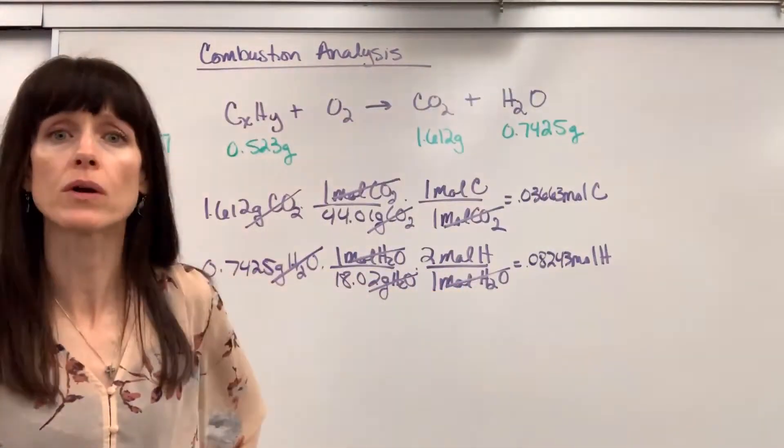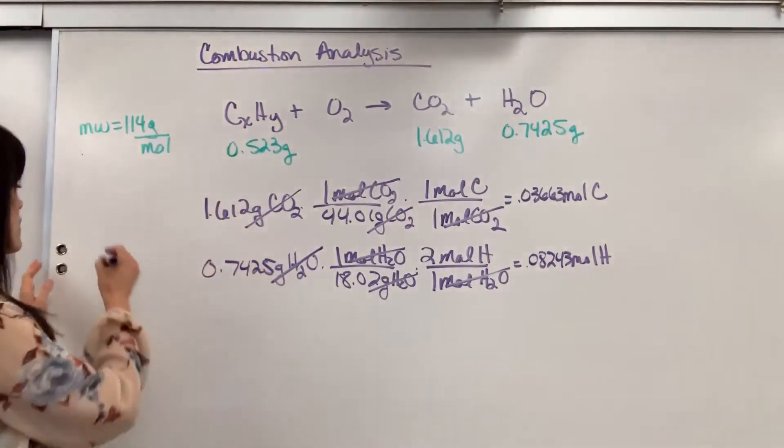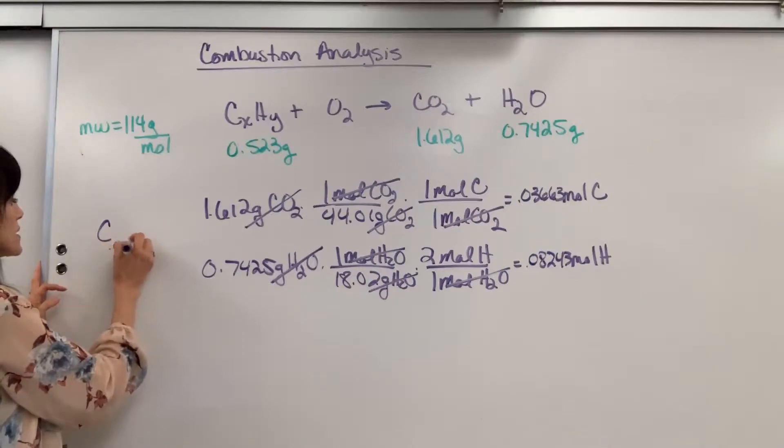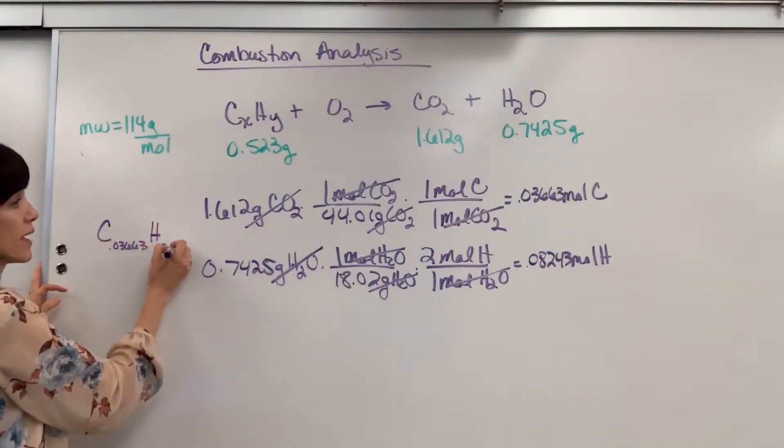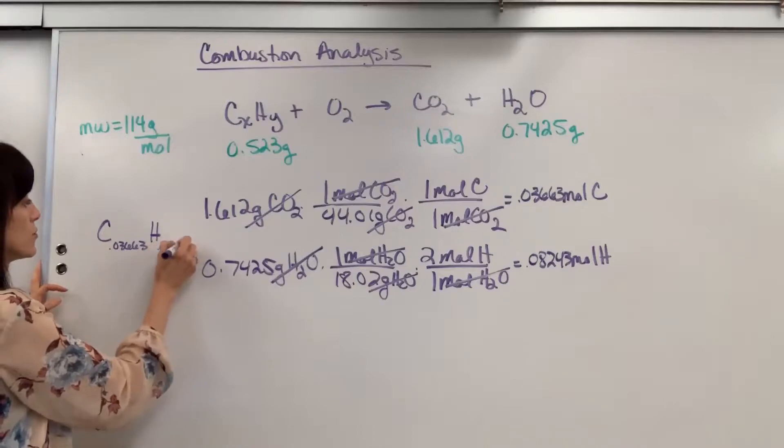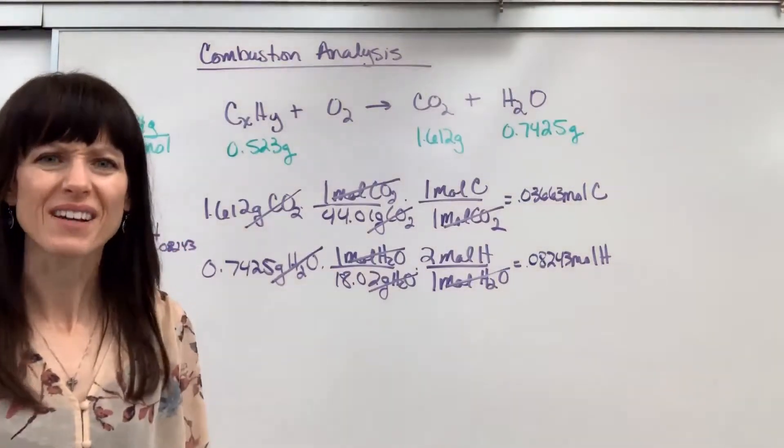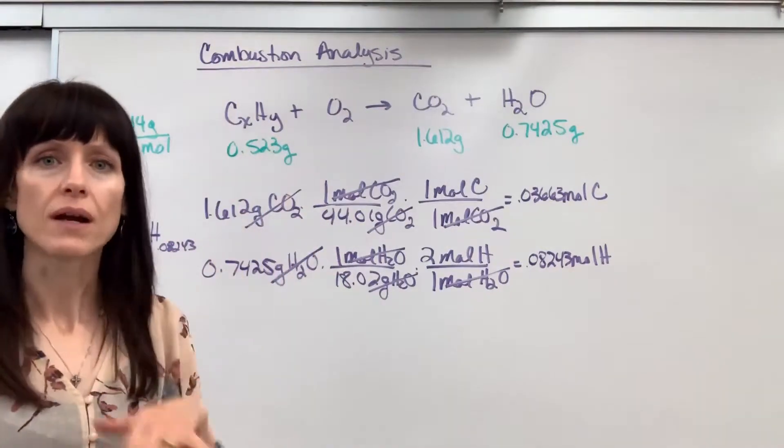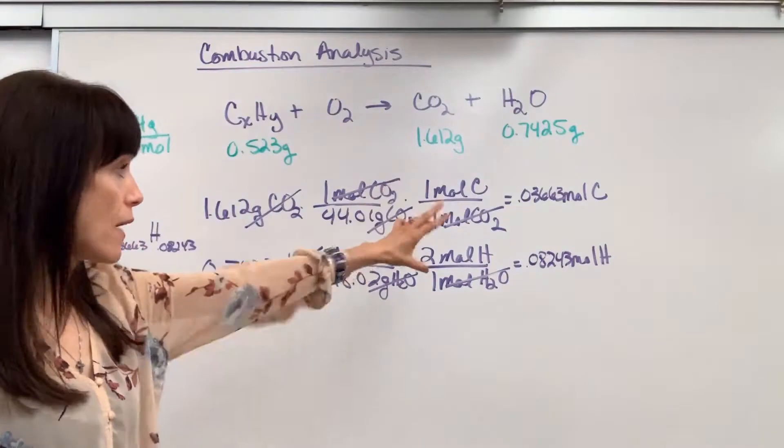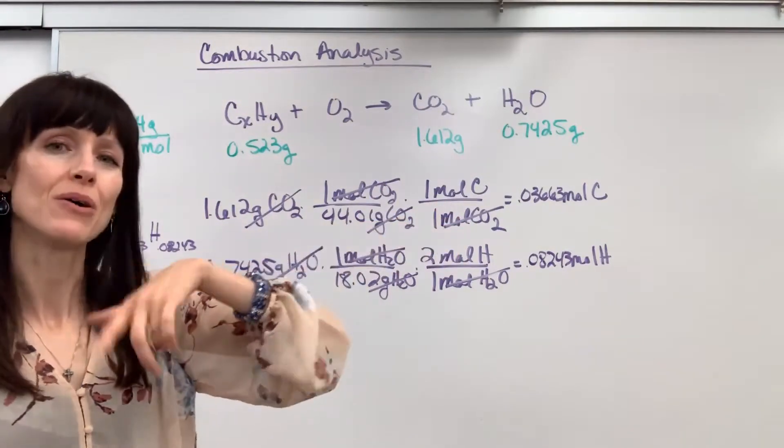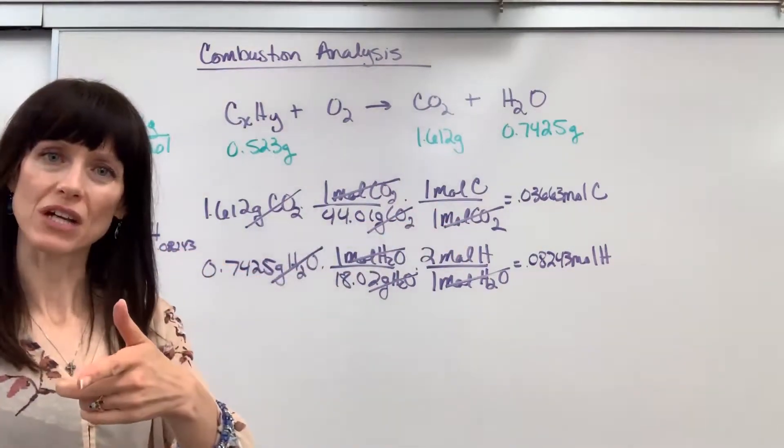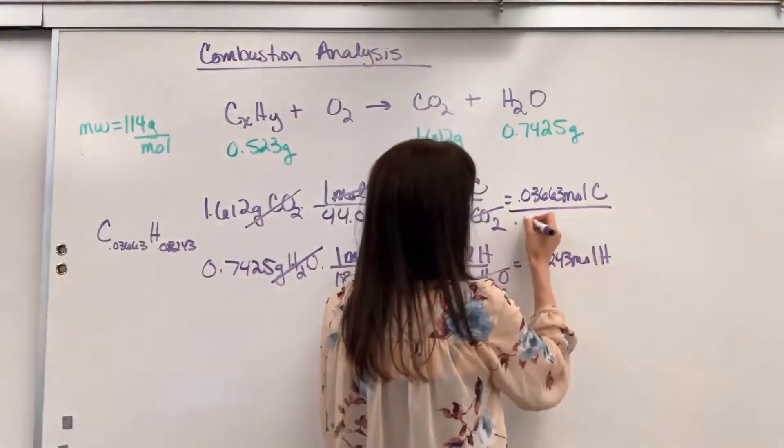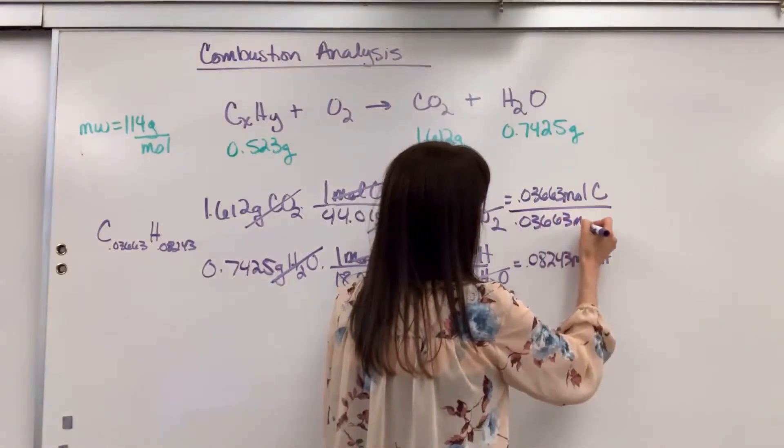So we found the molar ratio. We have carbon 0.03663 for every hydrogen 0.08243. There's the molar ratio, but it's ugly. They're not small whole numbers. This is where we go to empirical formula. We found the molar ratio, but we want small whole numbers. You remember the trick. You divide by the smallest mole.